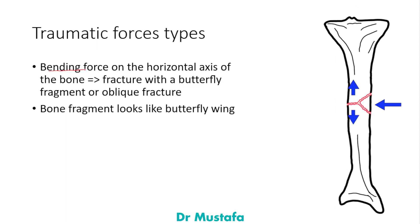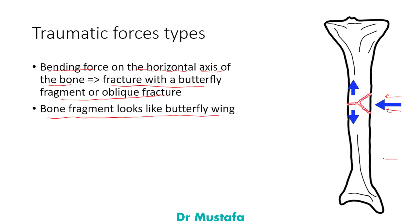A bending force applied on the horizontal axis of the bone produces a fracture with a butterfly fragment, or an oblique type of fracture. The bone fragment looks like a butterfly wing, which is why it's called a butterfly fracture. Applying a bending force to the tibial bone can produce the butterfly fracture, or alternatively just an oblique fracture.